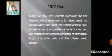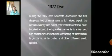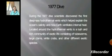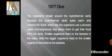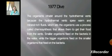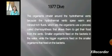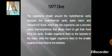During the 1977 dive, scientists discovered the first deep sea hydrothermal vents, which helped explain the ocean's salinity and how Earth ventilates internal heat. Located around the hydrothermal vents is a lush and rich community of exotic life, consisting of tube worms, large clams, white crabs, and other exotic species. These organisms inhabit the area around hydrothermal vents because the warm, mineral-rich fluids allow them to use chemosynthesis to obtain food. Smaller organisms feed on bacteria in the water, while larger organisms feed on the smaller ones.